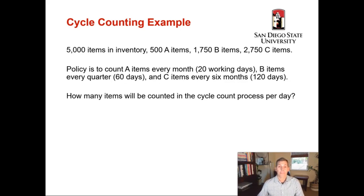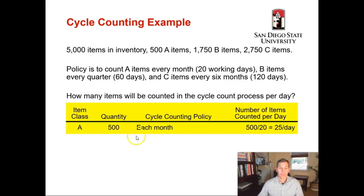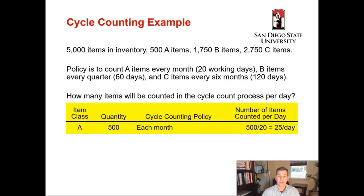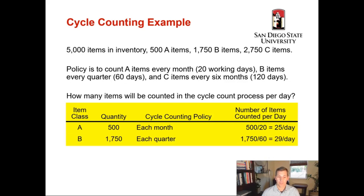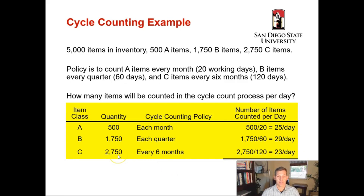For our cycle counting example, we calculate how many items we'll count every single day. It's simple math. We take our 500 A items, counted once a month (20 working days), so we count 25 A items per day. For our 1,750 B items, counted every quarter (60 days), we count approximately 29 B items per day. For our 2,750 C items, counted once every six months (120 working days), we count 23 C items per day.